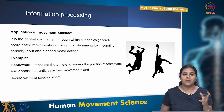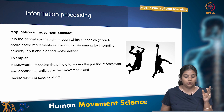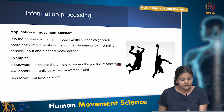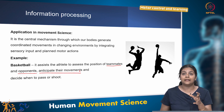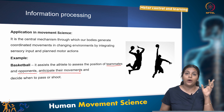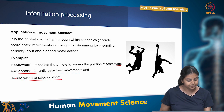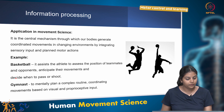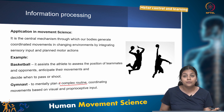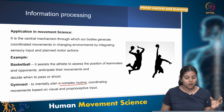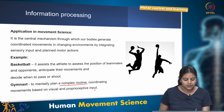For example in basketball, information processing helps the athlete assess the positions of teammates and opponents, anticipate their movements, and decide where to pass or shoot from. For a gymnast, information processing helps coordinate a complex routine based on visual and proprioceptive input.